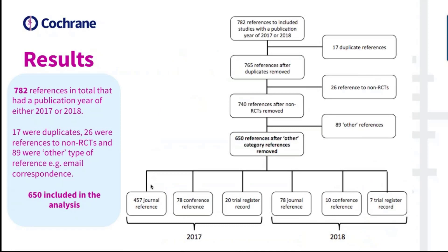In April this year we downloaded the IDs — accession numbers or trial registration numbers — of all included studies with a year of publication or trial registration date of 2017 or 2018. This gave us 782 references. After cleaning the data set — removing duplicates, references to non-RCTs, and 89 other references such as email correspondence or unpublished data — we were left with a data set of 650 references. We then classified each one by type: journal reference, conference publication, or trial registry record.